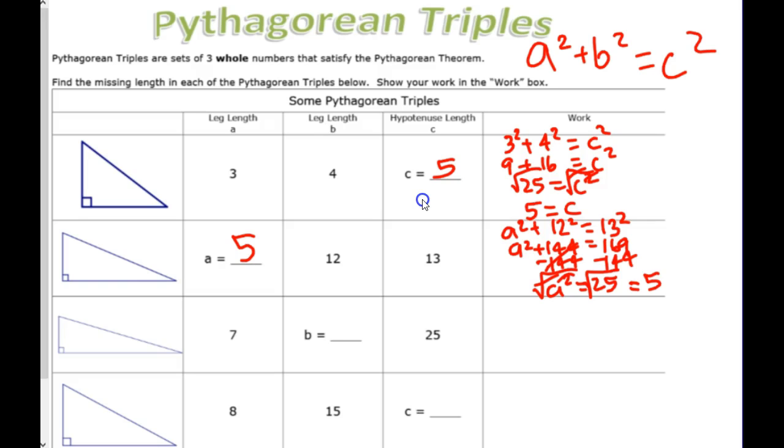7, B, and 25. So, Pythagorean Theorem. 7 squared plus... Make sure this looks like a B and not a 6. B squared equals 25 squared. 7 squared.